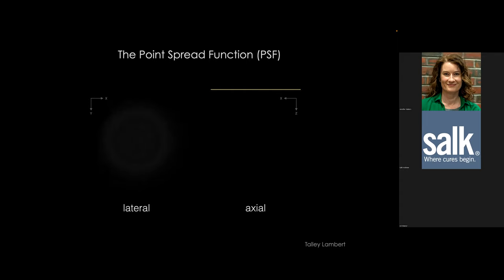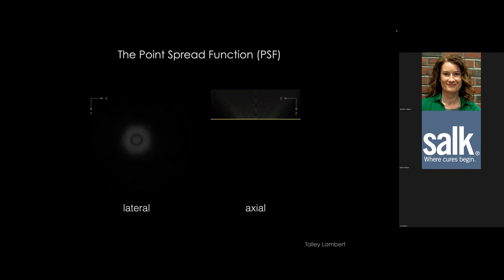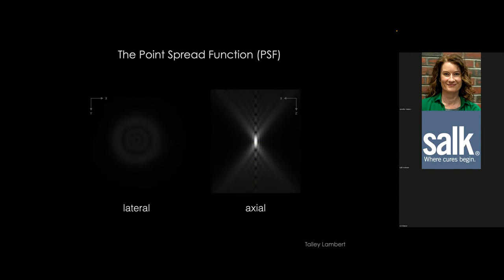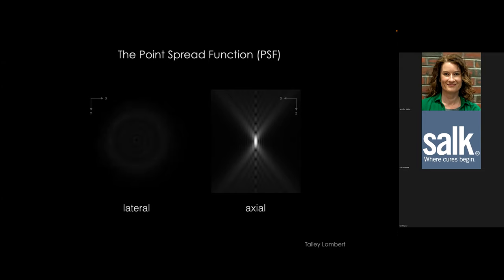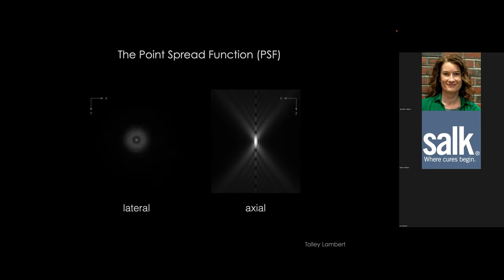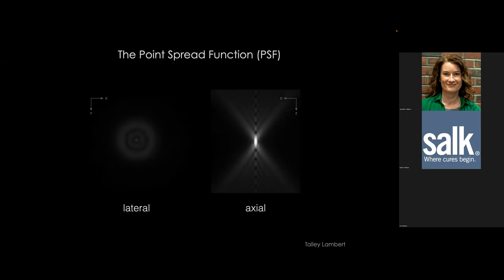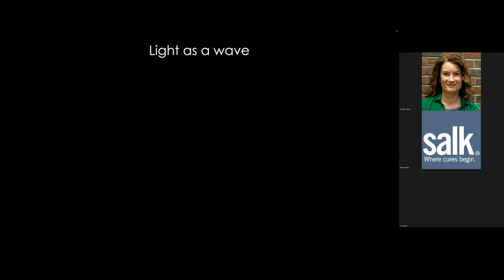As we move through focus, we build up an XZ image of the axial PSF. It looks quite different from the lateral view: the maximum is more elongated, and there are beautiful interference patterns above and below the focal plane. This reveals that the PSF has very different characteristics in the axial versus lateral directions.